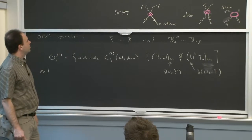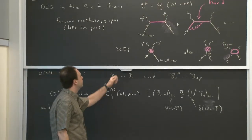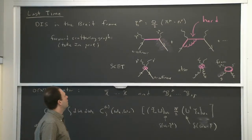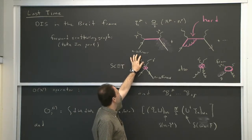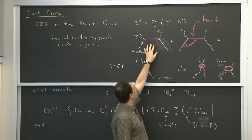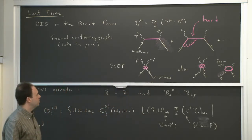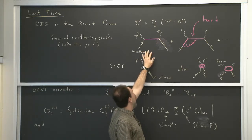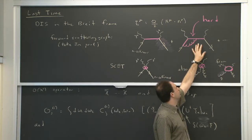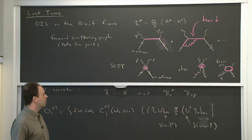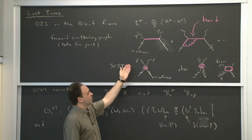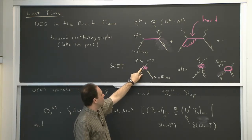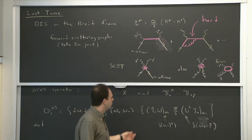To explore the parton distribution function, we need a process that contains it — and that process is DIS, the simplest such process. We started thinking about deep inelastic scattering in the Breit frame, where Q of the photon has a component only in the z direction. In that frame, the incoming quarks and gluons in the proton are collinear, and the intermediate out-state is hard. In the effective theory, you write down the lowest possible dimension operator, and everything that's a hard loop goes into the Wilson coefficient.